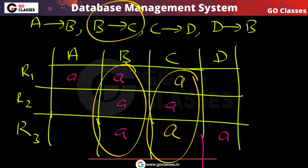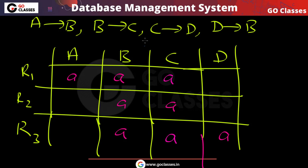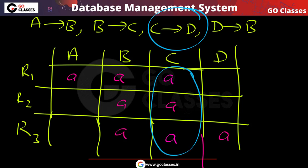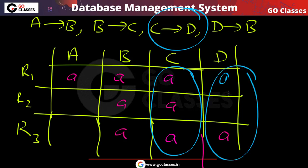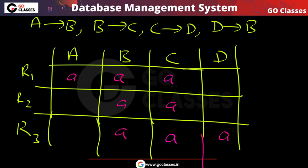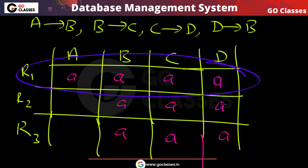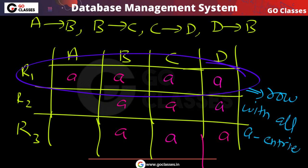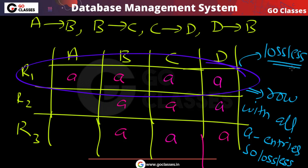Now applying C→D: since C has the same value in R1 and R2 rows, D must also be the same in those rows. So D becomes 'a' (all A entries). We now have a row with all A entries — that is the stopping condition. We can stop here, and conclude this is lossless.